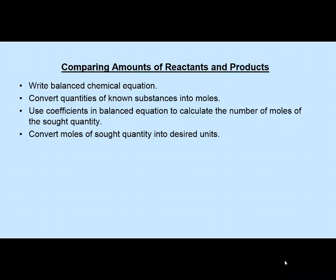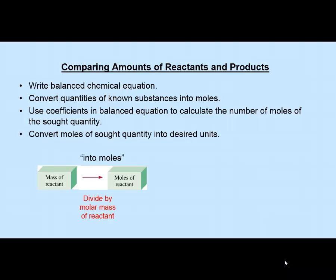Here are the steps visually for a calculation. Say we're given the mass of a reactant—perhaps in milligrams—we might use a metric conversion to get to grams. Once we have grams of that reactant, we convert to moles by dividing by the molar mass. That gives moles of the reactant. Once we have moles of that reactant, we can convert to any other substance in the balanced equation by looking at the coefficients, producing a molar ratio. We convert from moles of one substance to moles of another using that molar ratio.